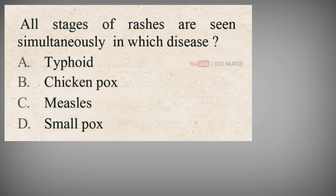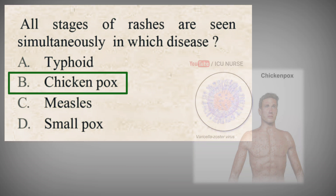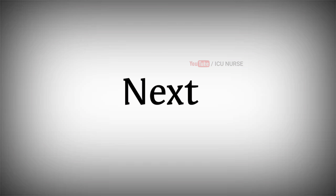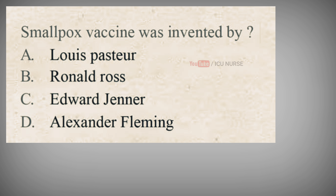All stages of rashes are seen simultaneously in which disease? A. Typhoid, B. Chickenpox, C. Measles, D. Smallpox. The correct answer is B. Chickenpox. In chickenpox, the rash develops more rapidly and vesicles, pustules, and scabs may be seen at the same time.